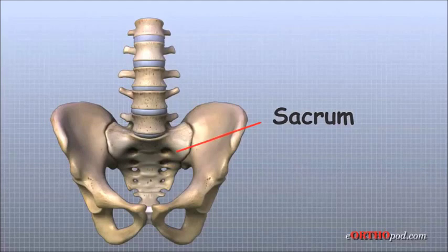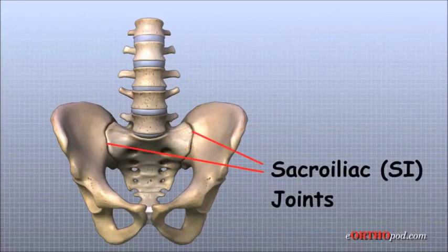There is a joint on each side of the sacrum that connects the sacrum to the pelvis. This joint is called the sacroiliac, or SI joint.